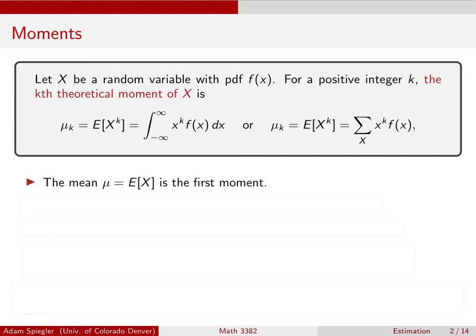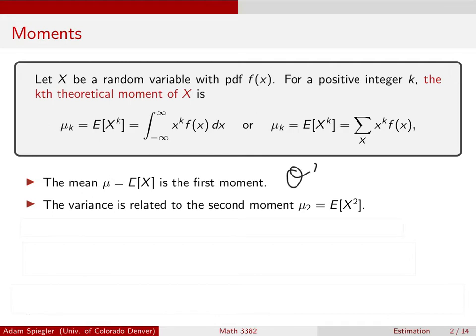For a continuous distribution this is an integral; for a discrete distribution it's a sum. The first moment is just the mean — the expected value of X to the first power. Once we have the first and second moments, that's enough to determine the variance, since variance equals the expected value of X squared (the second moment) minus the first moment squared.